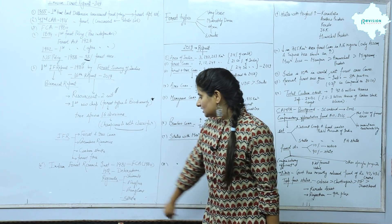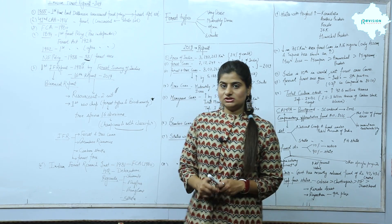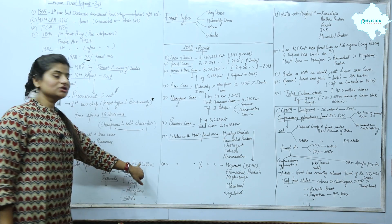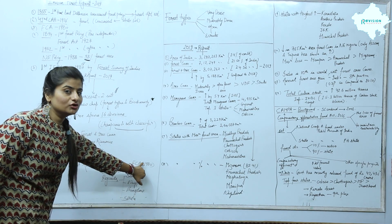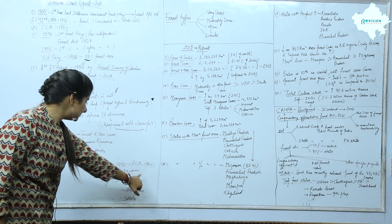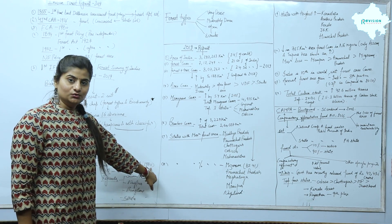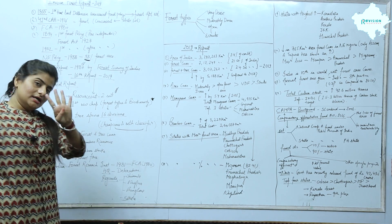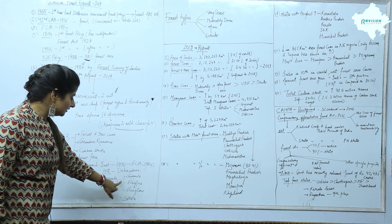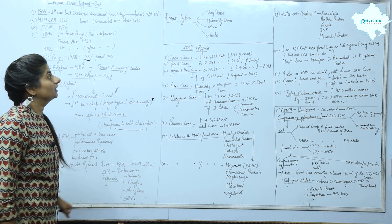Then there are forest fires. The Indian Forest Research Institution was established under the Forest Conservation Act of 1980. Its headquarters is in Dehradun, Uttarakhand. It has 4 regional offices located in Shimla, Nagpur, Bangalore, and Kolkata.